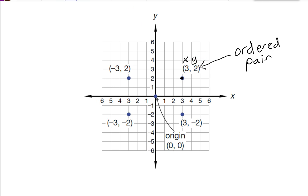So to get to this point I would go over three places to the right, 1, 2, 3, and up two places, 1, 2. To get to the point on this side, negative 3 means to the left, so I would start at the origin and go three places to the left, and then up two. To get to this bottom one, I would go three places to the left, and then down two. And this other one is three places to the right, and then down two.